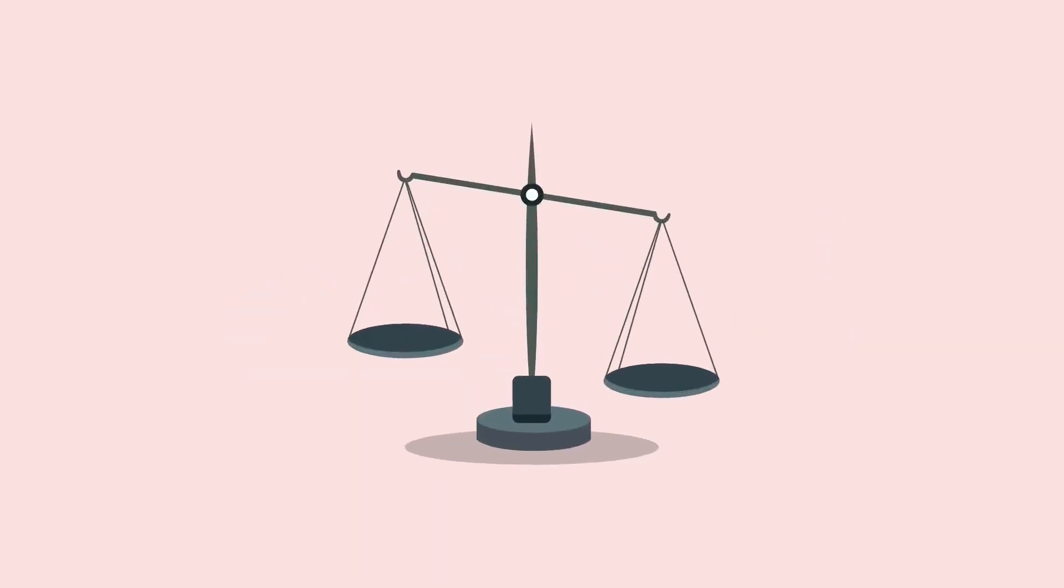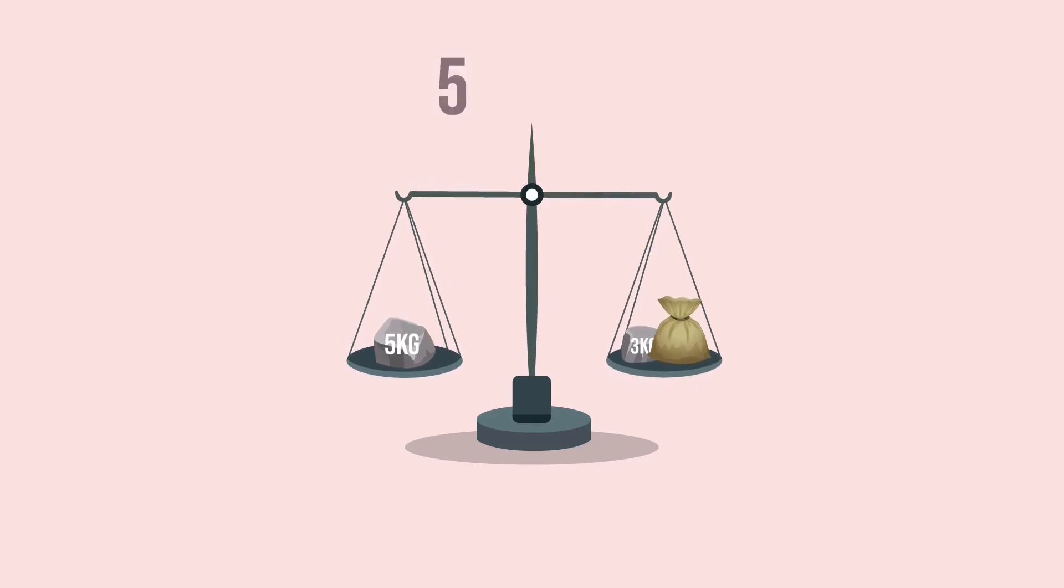For instance, if you have a 5 kilogram block and a 3 kilogram block, you can use these two to measure 2 kilograms of vegetables. How? Just put your 5 kilogram block on one side and your 3 kilogram block plus your vegetables on the other and level it. Since 5 minus 3 equals 2, you will know that the weight of the vegetables is 2 kilograms.